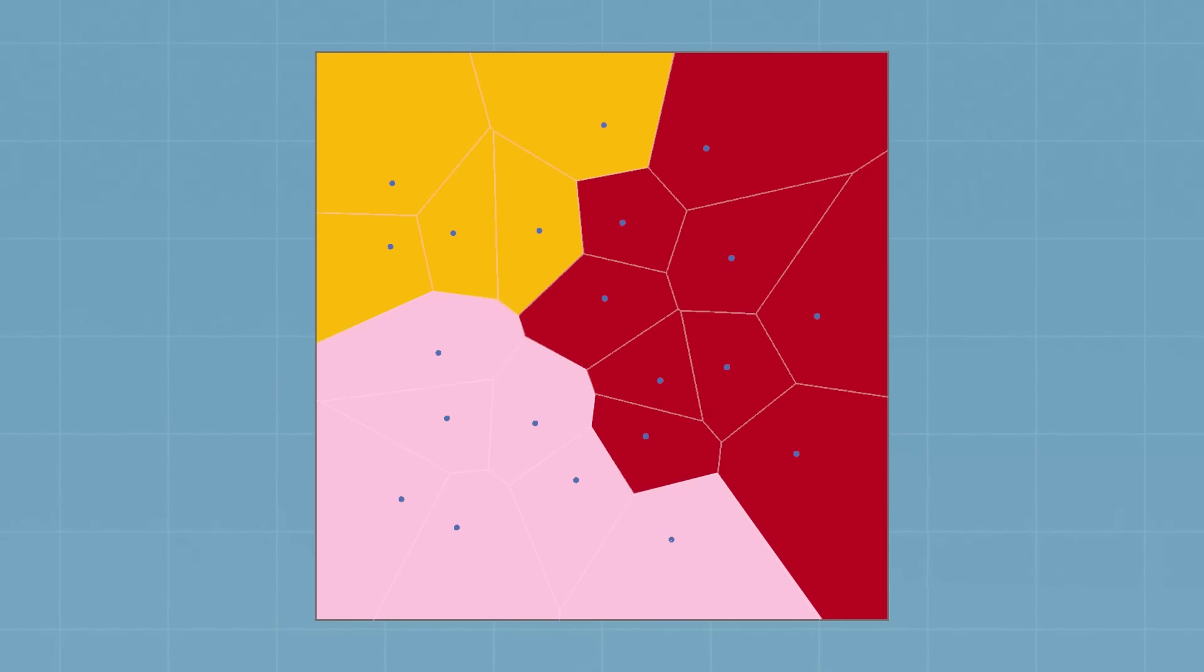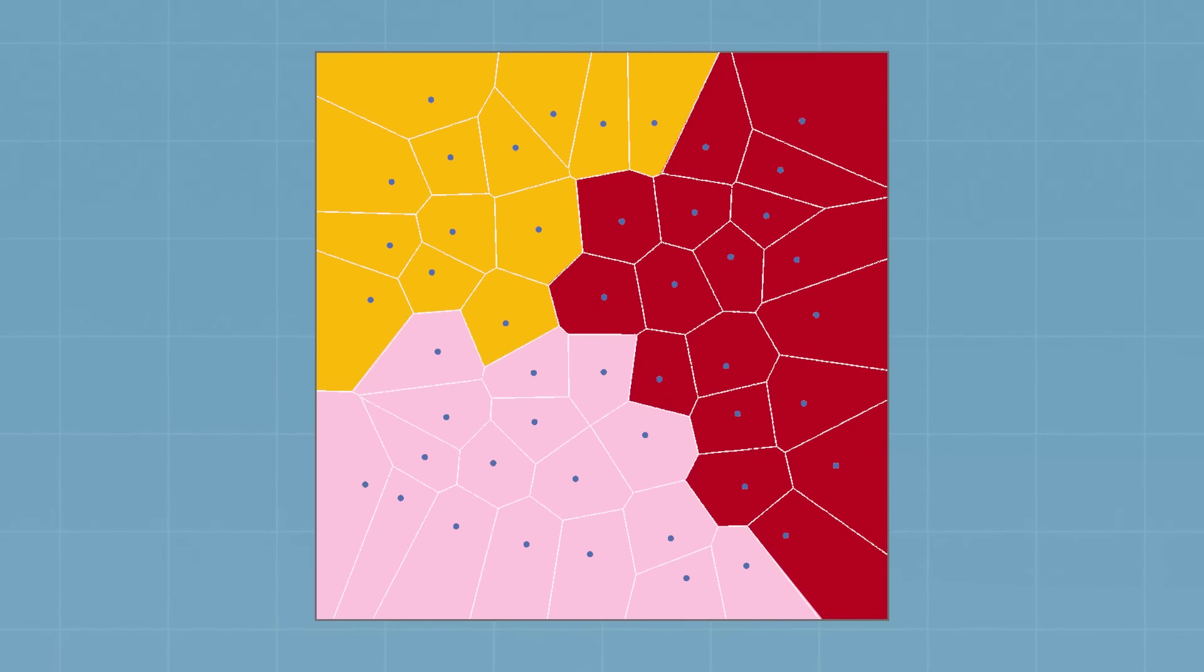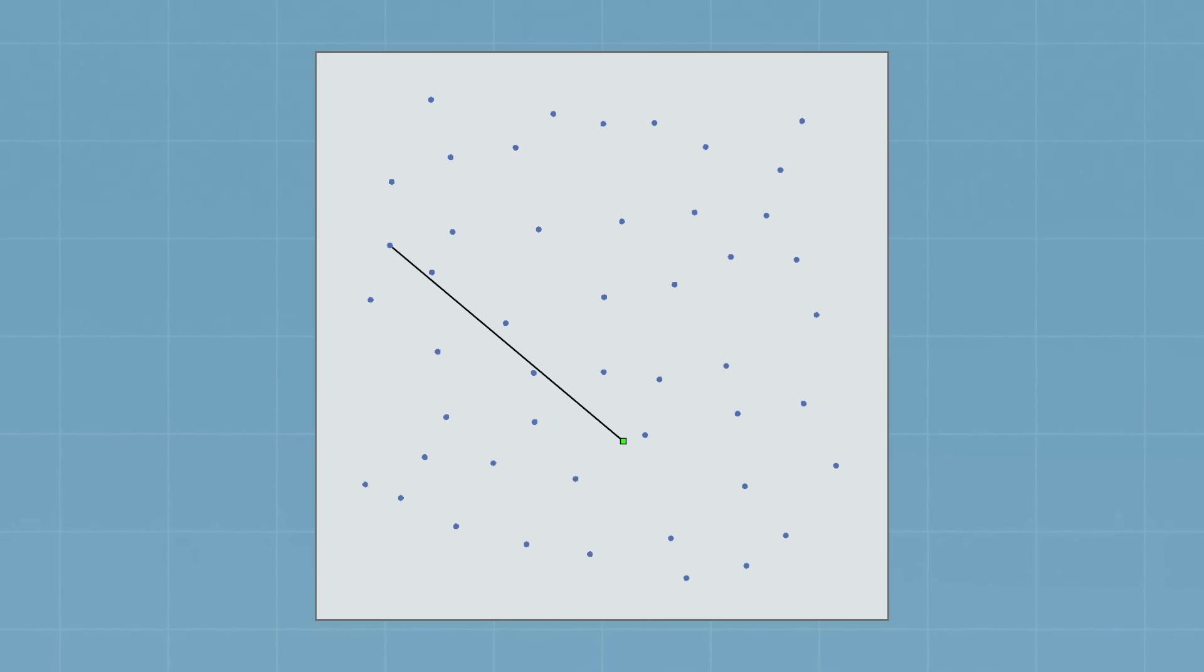The most obvious improvement would be to double the amount of subpoints, but that would also double the generation time. This is because right now for each and every pixel we have to cycle through all of the subpoints to find the closest one which determines the color of the pixel.